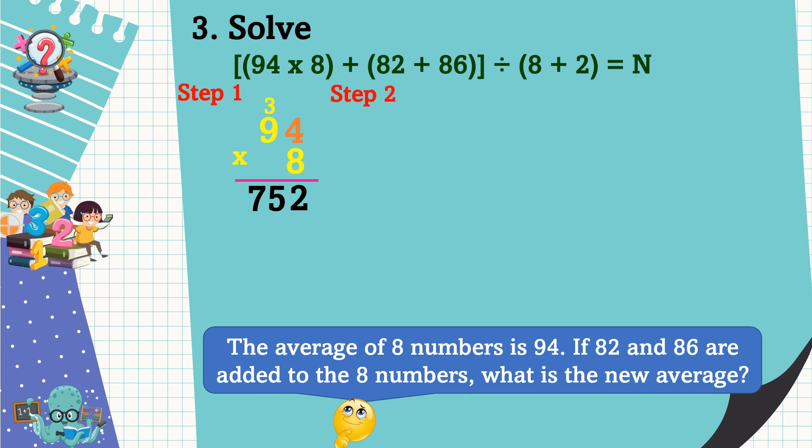8 times 4 is equal to 32, regroup 3. 8 times 9 is equal to 72, plus 3 is equal to 75. The answer to our hidden question is 752. Then in step 2, we're going to add 82 and 86, which are the two new numbers to be added. 2 plus 6 is equal to 8, 8 plus 8 is equal to 16.